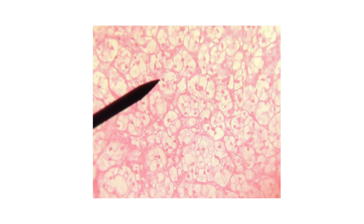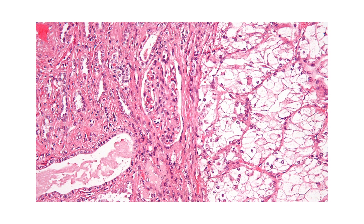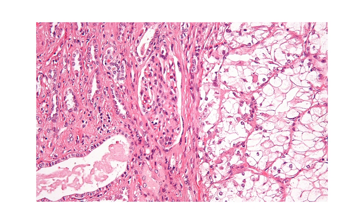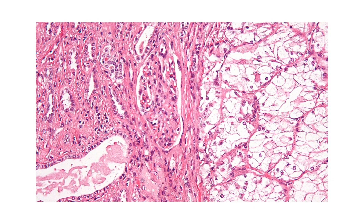The tumor cells are arranged in a very delicate fibrous stroma. Because of this, they can adopt multiple arrangements. Commonly they are arranged either in solid configuration, acinar, or tubular. Here in the picture we can clearly see the acinar arrangement of the clear cells.